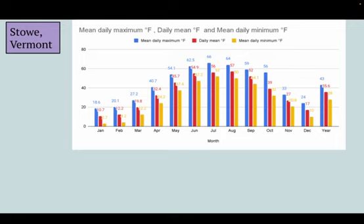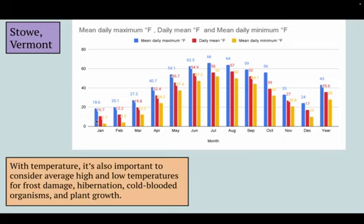For Stowe, Vermont, this is our temperature profile. What we're seeing here is the average high, the average median, and average low temperature for each month. So we take the 31 days of high temperature in January, the average and the low — and this is how we get this temperature profile. With temperature, it's really important to know these highs and lows because that might tell you when and how frost is occurring, which is really important for plant growth, especially in April and October.